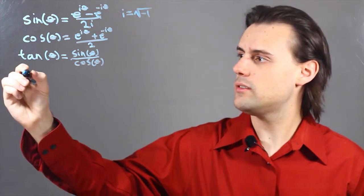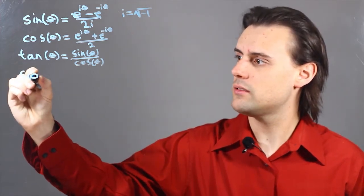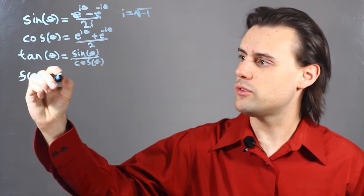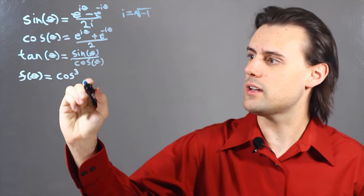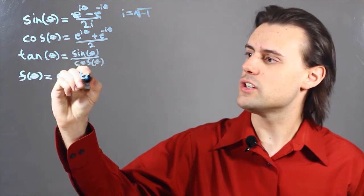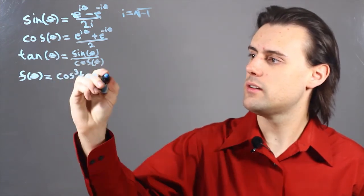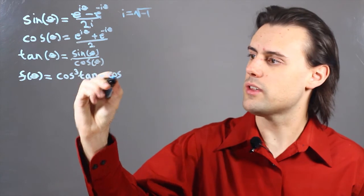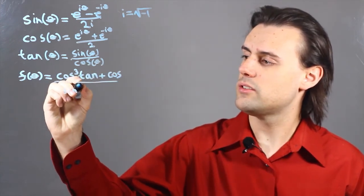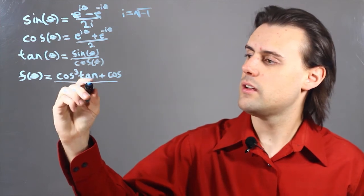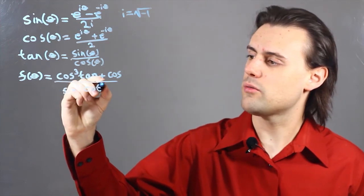Let's say I have a function of theta which is equal to cosine of theta cubed. I'm not going to write theta here for the sake of simplicity, times tangent of theta plus cosine of theta, and I divide by sine squared of theta times cotangent squared theta.